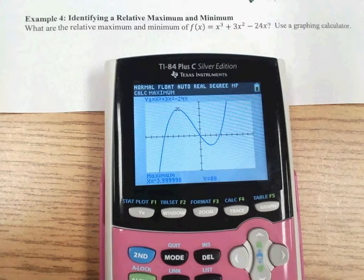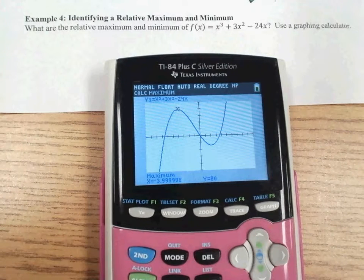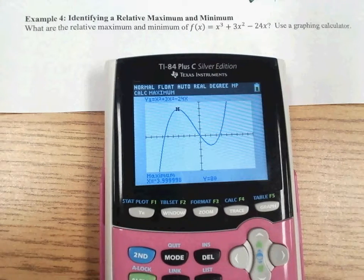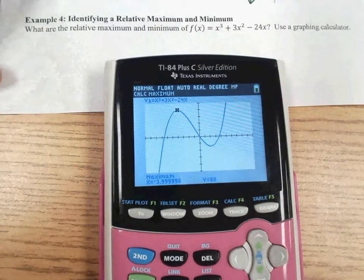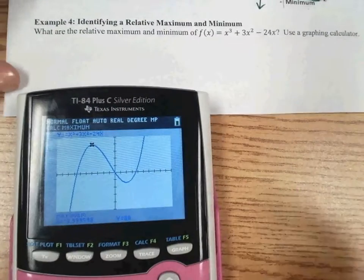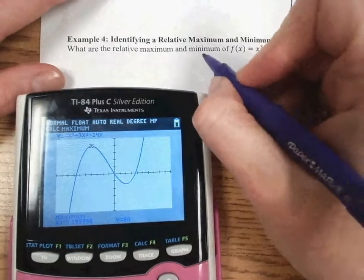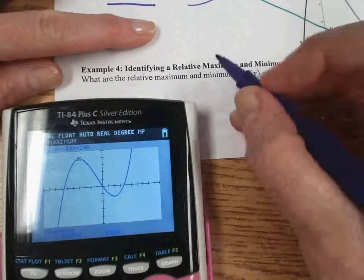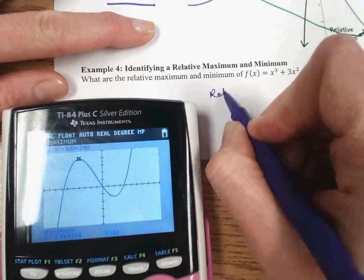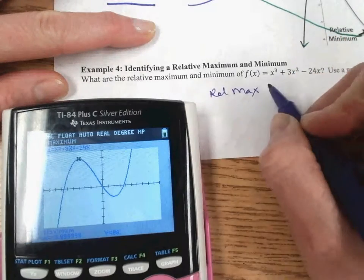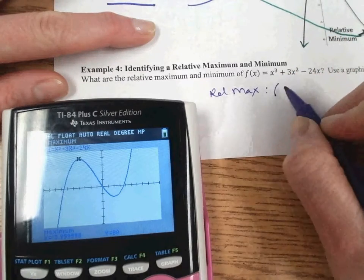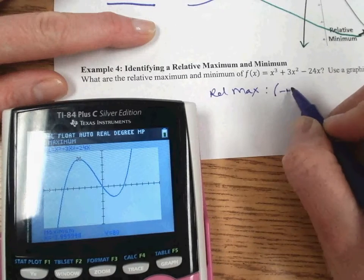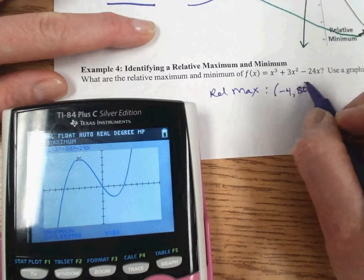So for our graph x cubed plus 3x squared minus 24x, it looks like our relative max is at y equals 80. And we can actually write that as an ordered pair. So for our relative max, we're going to say, round that to a negative 4 and 80.